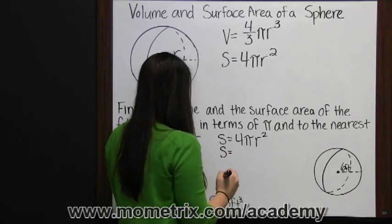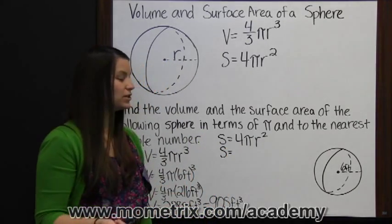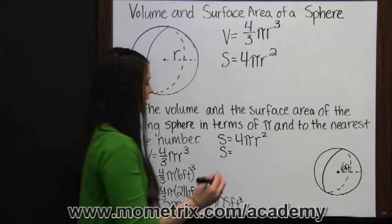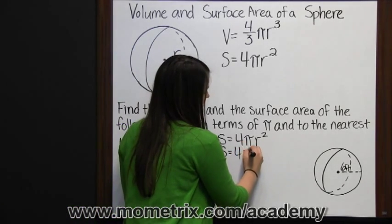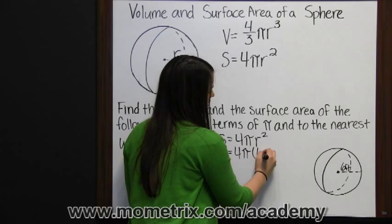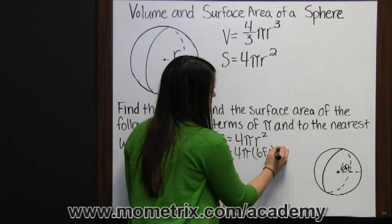So now we need to substitute six feet for our radius. So four pi times our radius, which is six feet, squared.